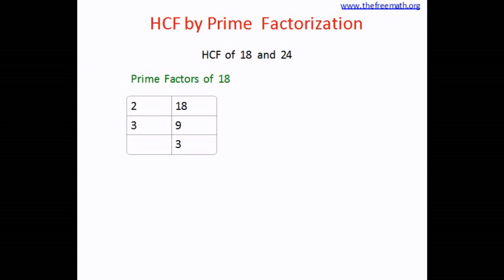For 24 divided by 2 answer is 12, again divide by 2 answer is 6, divided by 2 answer is 3. 3 is a prime number so we stop here.